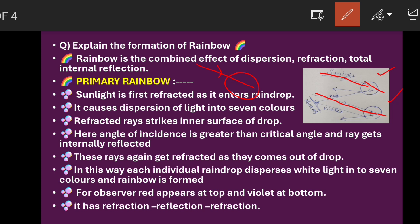This refraction causes dispersion of light — the sunlight, which is white light, splits into seven different colors, that is VIBGYOR. This dispersed light falls on the inner surface of the raindrop. At this inner surface, the angle of incidence will be greater than the critical angle. When the angle of incidence is greater than the critical angle, it undergoes total internal reflection.